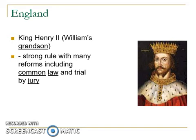Henry II established trial by jury in England — the idea that 12 neighbors of the accused, who answered a royal judge's questions about the facts of the case, would help determine if someone was innocent or guilty. Rulings of the different judges over the years were combined into what became known as common law, which is the basis for legal systems today in many places, including the United States.